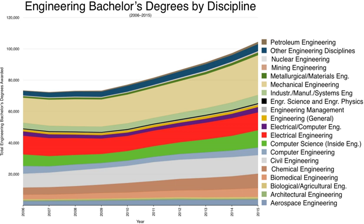Engineering education is the activity of teaching knowledge and principles to the professional practice of engineering. It includes an initial education, bachelor's and/or master's degree, and any advanced education and specializations that follow. Engineering education is typically accompanied by additional postgraduate examinations and supervised training as the requirements for a professional engineering license.